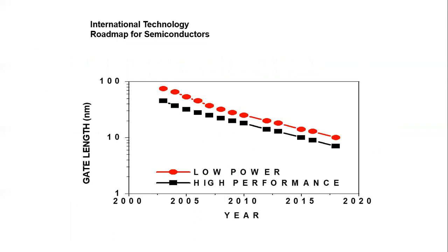There is a society called the International Technology Roadmap for Semiconductors, ITRS. Looking at gate length in nanometers, you can see that year by year gate length has been reduced from 100 nanometers to 10 nanometers for both low power and high performance applications. This is due to scaling — specifically, channel length scaling, which we will discuss in coming classes.